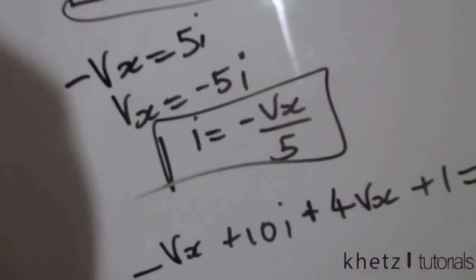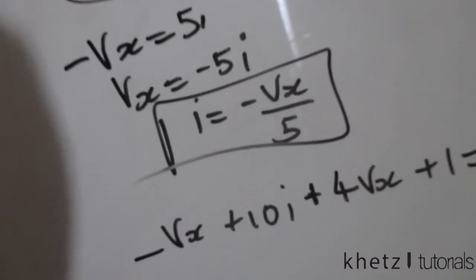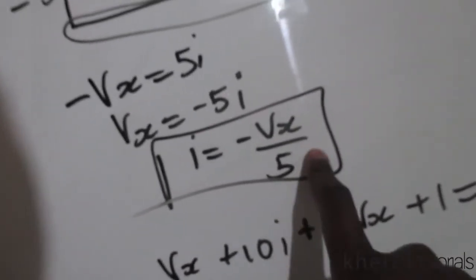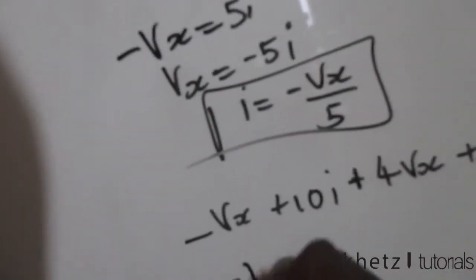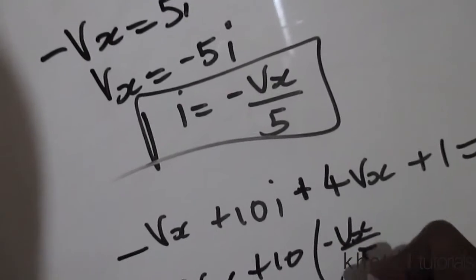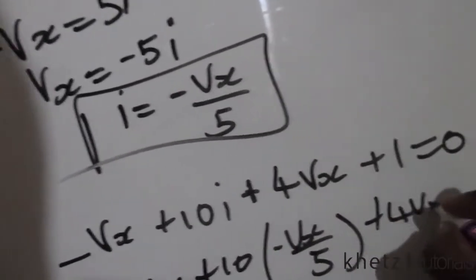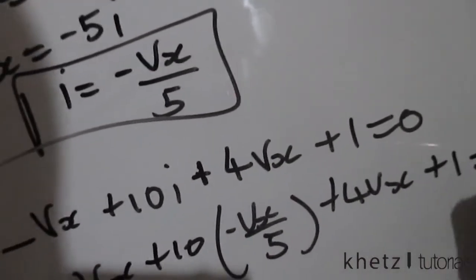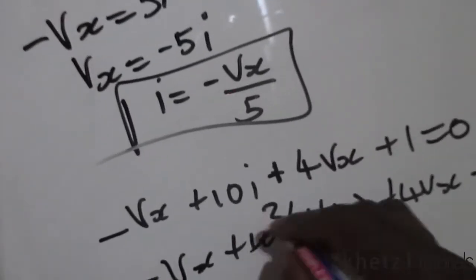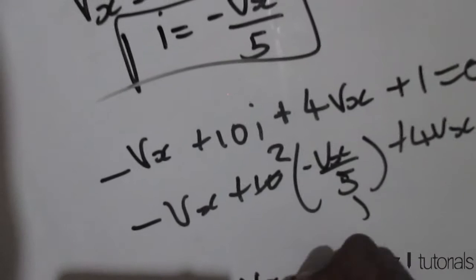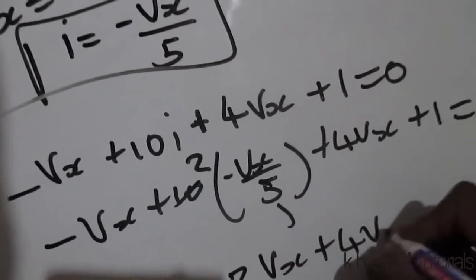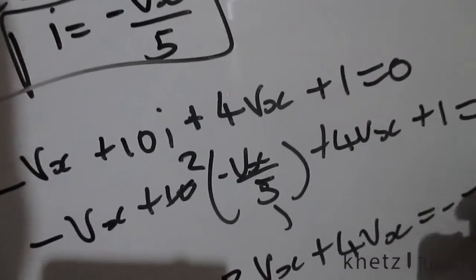Now substituting the value of i: negative vx plus 10 multiplied by (negative vx divided by 5) — wait, substituting i as (negative vx)/5 gives negative vx plus (10 × negative vx/5) plus 4vx plus 1 equals 0. Simplifying: negative vx minus 2vx plus 4vx equals negative 1.